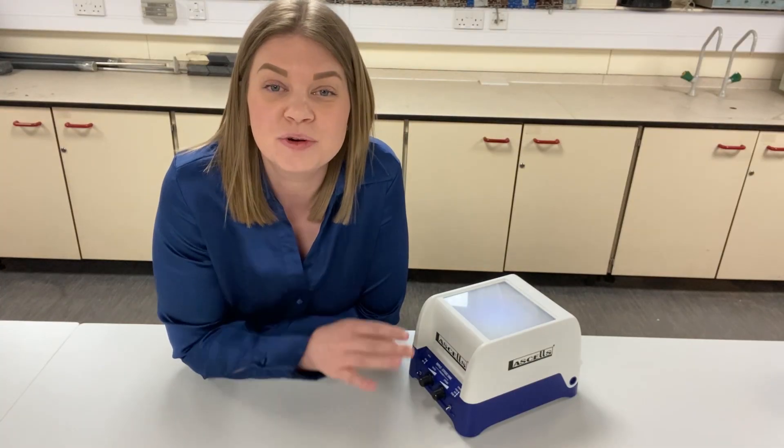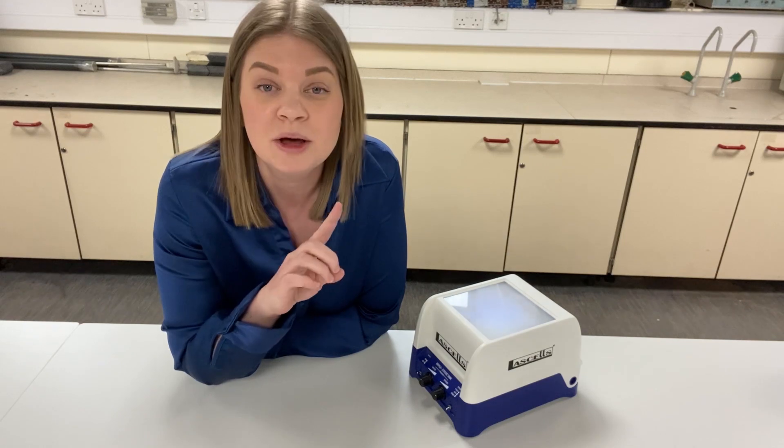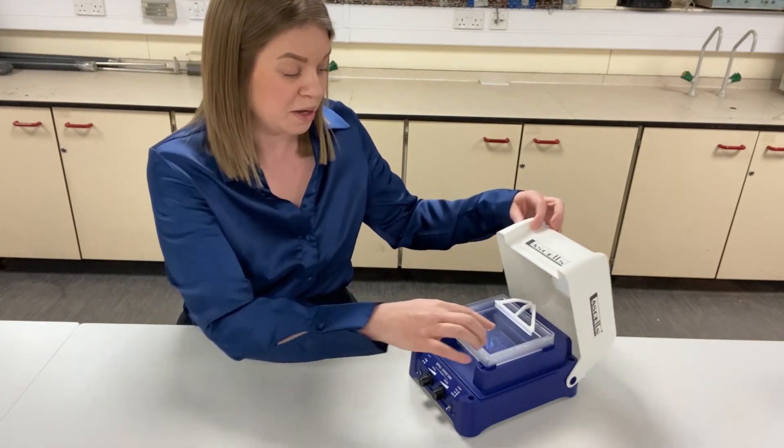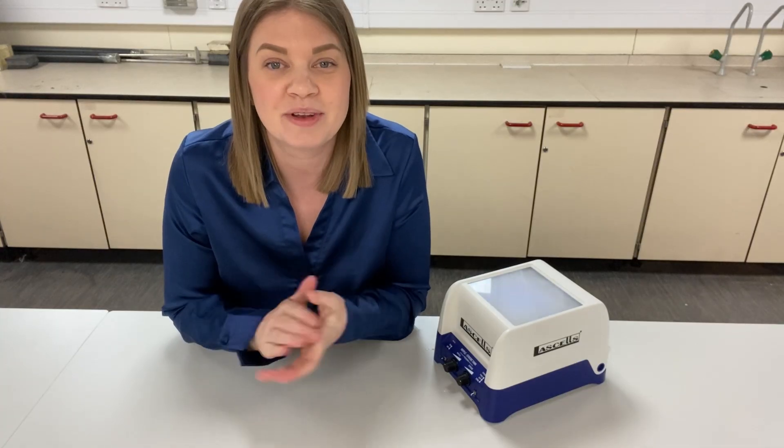Now if you find that your lines aren't perfectly straight, you might want to get a little bit of washing up liquid. Put a bit on your finger and just wipe it around the edges of the tank and on the underside of the dipper.